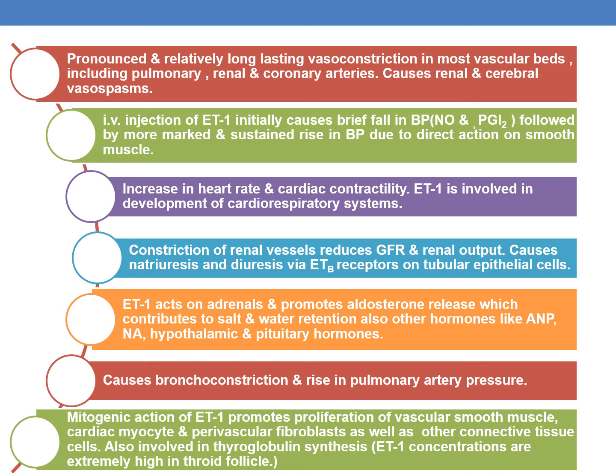ET1 also releases other hormones like ANP (atrial natriuretic peptide), noradrenaline, and hypothalamic and pituitary hormones. It causes bronchoconstriction and rise in pulmonary arterial pressure, and has a mitogenic action. The mitogenic action of ET1 promotes proliferation of vascular smooth muscle, cardiac myocytes, and perivascular fibroblasts as well as other connective tissue cells, leading to hyperplasia.